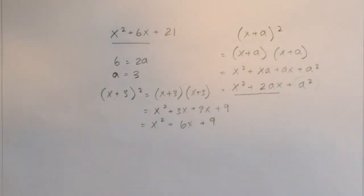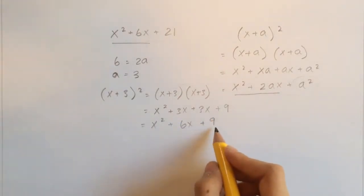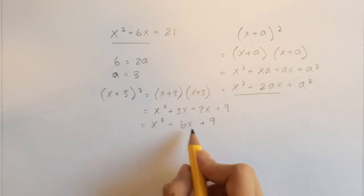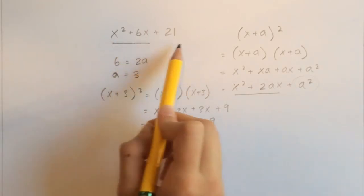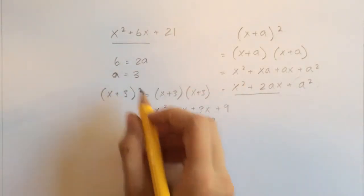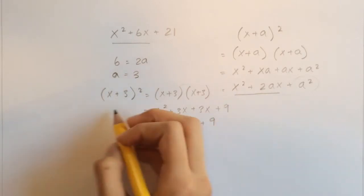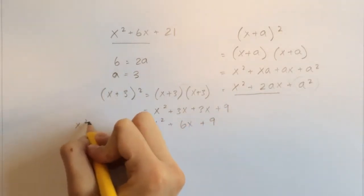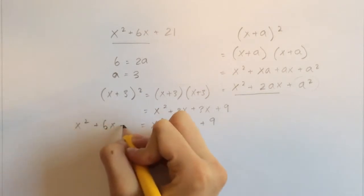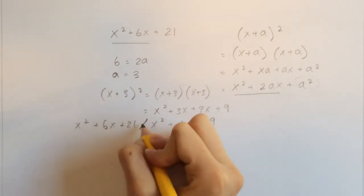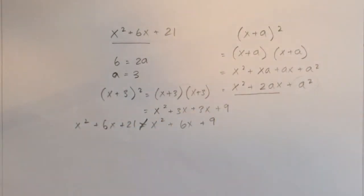Now that we've gotten this, we can see that this equation right here, x² + 6x + 21, is not equal to this. So x² + 6x + 21 is not equal to x² + 6x + 9.